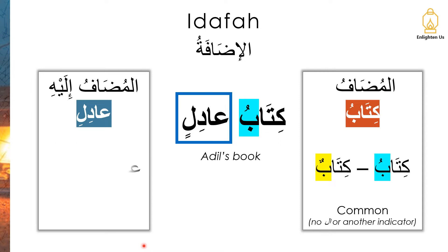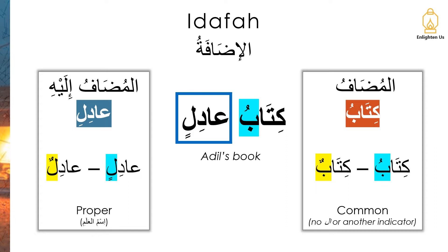Adil is our mudhaafile. In its original form it would have been in rafa, but as you can see it's in jar because it has kasra. It's proper because it's an ism ma'alam — a proper noun. This expresses both identification and possession: the book belongs to Adil, and in a sentence like 'I want Adil's book,' we're identifying a specific item among others — not any other book, and not Adil's bag or pen.